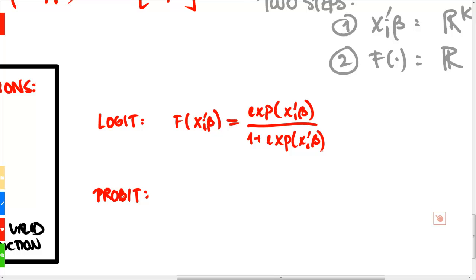The probit model uses the distribution function of a standardized normal distribution as the link function. The link function F of xi' beta is equal to the integral from minus infinity to xi' beta, and we integrate over 1 divided by the square root of 2 pi, multiplied by the exponential of minus t squared divided by 2, and we integrate with respect to dt. This is based on the standardized normal distribution that is used as the link function.